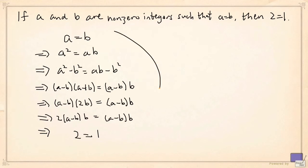Well, from here up to here, there's really nothing wrong. The problem is from this second last statement to the last statement. The operation here was dividing both sides by a minus b times b.